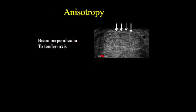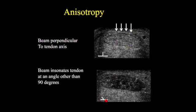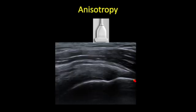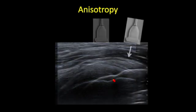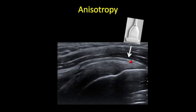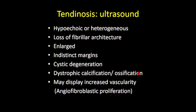Anisotropy means that if the ultrasound beam is perpendicular to the long axis of the tendon, we get maximum backscatter and the tendon appears bright. If you come in at an angle relative to the tendon's long axis — as little as 5 degrees — the tendon becomes progressively hypoechoic. This is particularly important when scanning tendons going around curved structures, such as the rotator cuff. To see the more distal portion of the tendon, you need to rock the transducer to insonate more perpendicular to the fiber orientation, avoiding artifactual hypoechogenicity that mimics tendinosis.